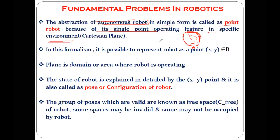The robot is operating by itself — there is no need for a human to interfere. So that particular robot is called an autonomous robot. That autonomous robot is also referred to as a point robot. Why is it referred to as a point robot? Because it is operating from a certain particular point — it has to determine its position, and only then can it perform a certain kind of activity. That is the reason that robot, in the situation where it is operating from a certain point, is referred to as a point robot.